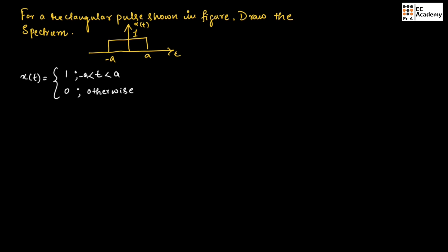From the definition of continuous time Fourier transform, we can write X(jω) is equal to the integration from minus infinity to infinity of x(T) exponential to the power of minus jωT dT. Let us call this equation number 1.